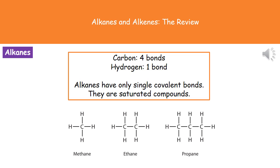The easiest way to draw displayed formulas for longer chain alkanes is to always start with the carbons, put the right number of carbons in a line, join them with lines, and then make sure there are 4 lines coming off each carbon atom. On any carbon not joined to another carbon, put a hydrogen at the end.